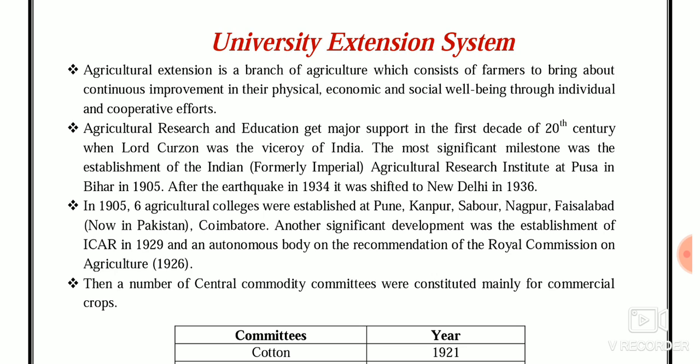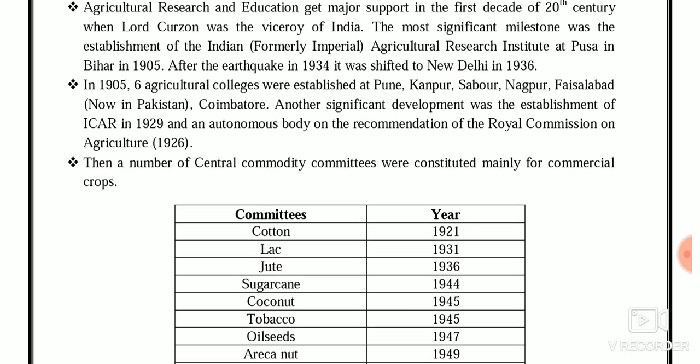In 1905, six colleges were established at Pune, Kanpur, Sabour, Nagpur, Faisalabad (now in Pakistan), and Coimbatore. Another significant development was the establishment of ICAR in 1929, which is an autonomous body started on the recommendation of the Royal Commission on Agriculture in 1926.